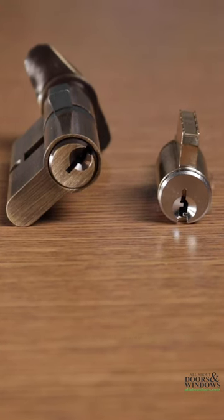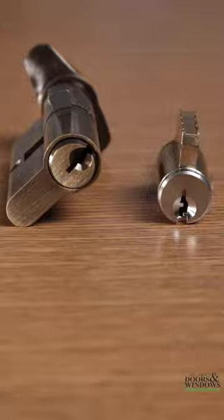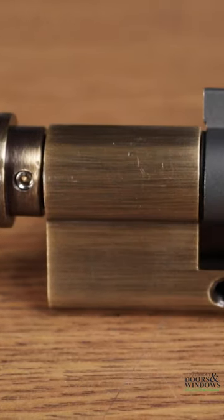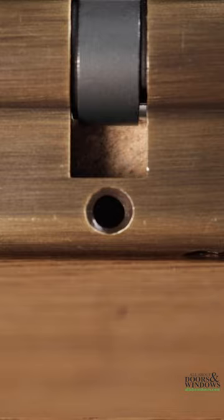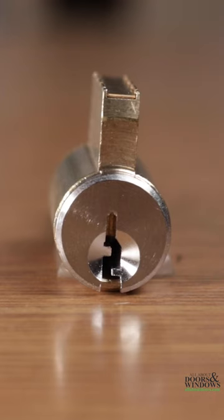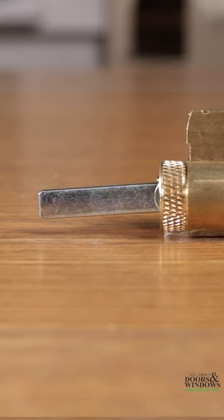The first step in determining the type of lock cylinder you have is to look at the shape of the lock. A Euro Cylinder Lock will have the same shape from front to back and is secured in place with a single screw, while an American Cylinder has a face for the key and ends in a flat tailpiece that goes into the tailpiece receiver on the lock body.